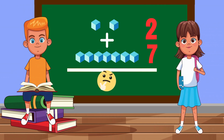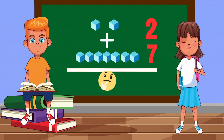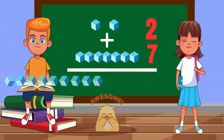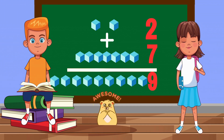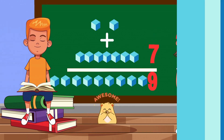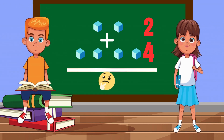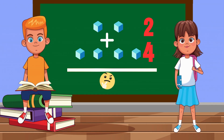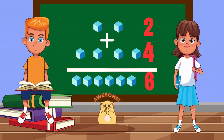Two cubes plus seven cubes equals... Nine cubes! Two cubes plus four cubes equals... Six cubes!